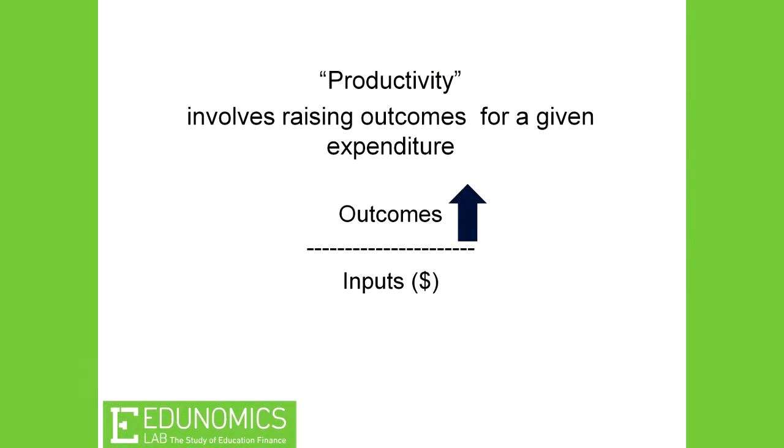So if we're going to recognize that there's this element of school effects in school finance, the task is not to ignore that but to figure out how to harness it. That's what I'm calling phase three — how do we leverage school effects — and that's what the new era of school finance is. What we're really after here is productivity. Productivity is a ratio: outcomes in the numerator, inputs or dollars in the denominator. When we talk about productivity, we're trying to grow the numerator — at whatever expenditure level you are, how do you get more outcomes?